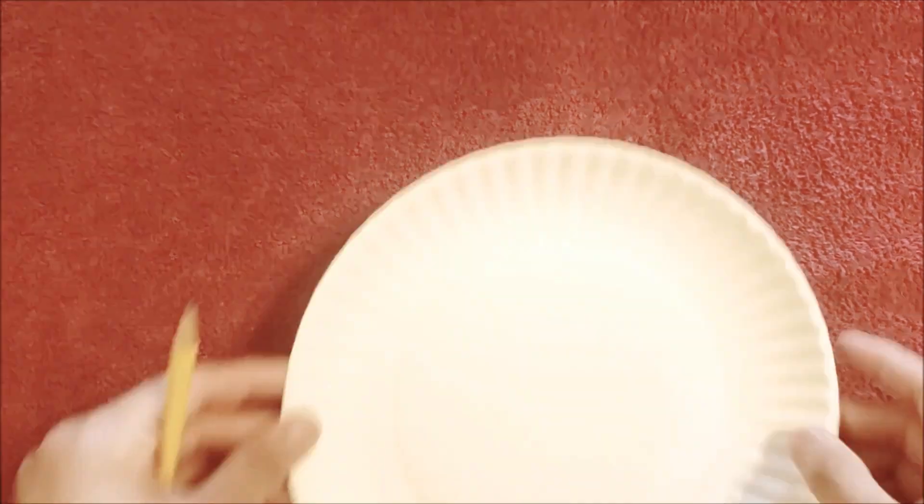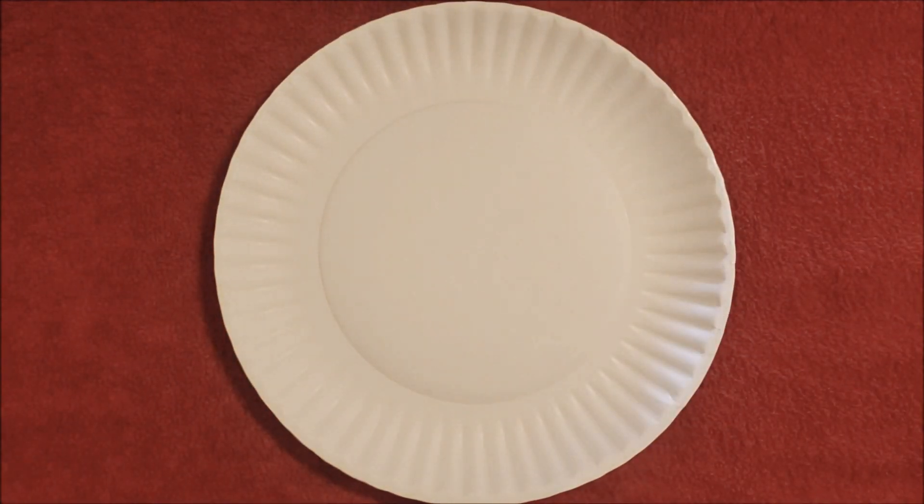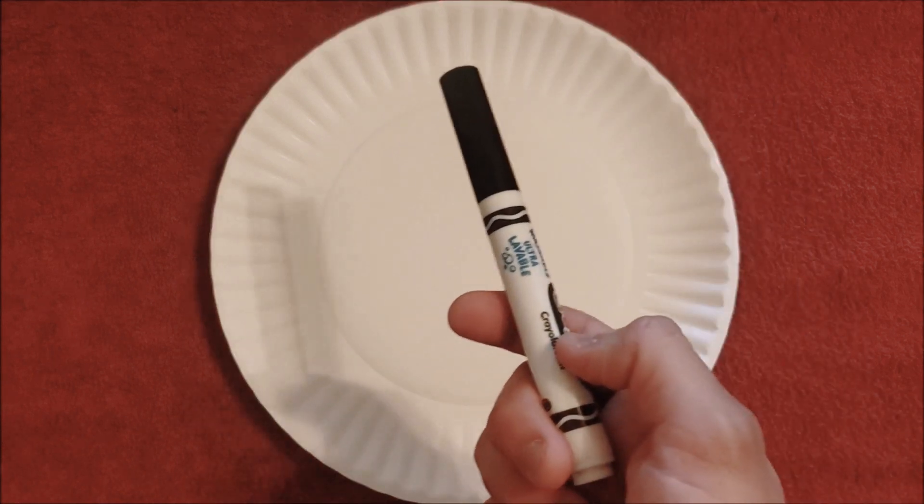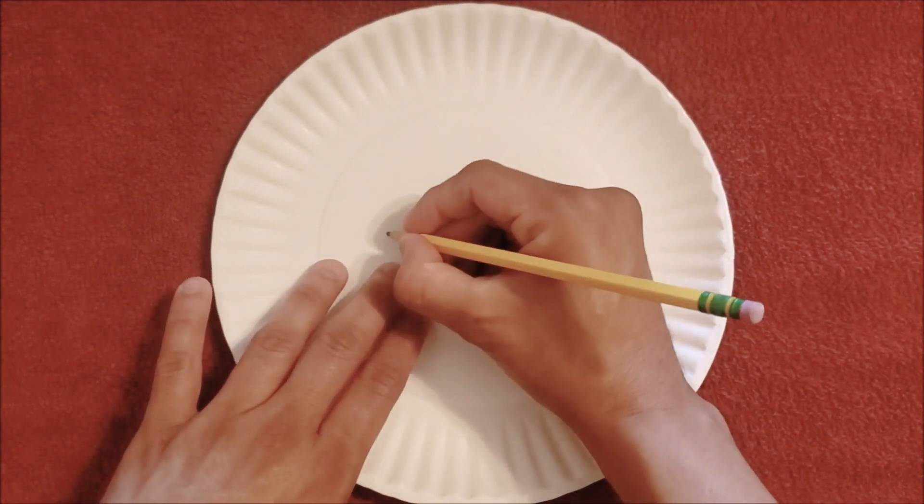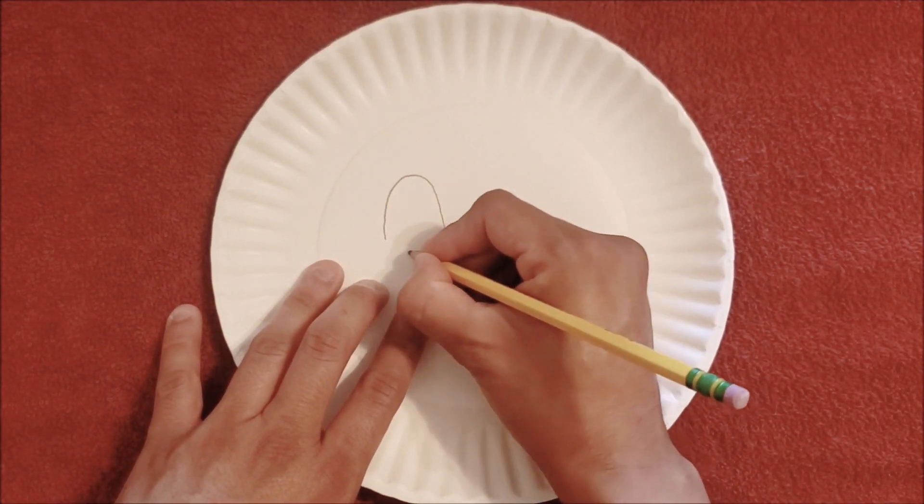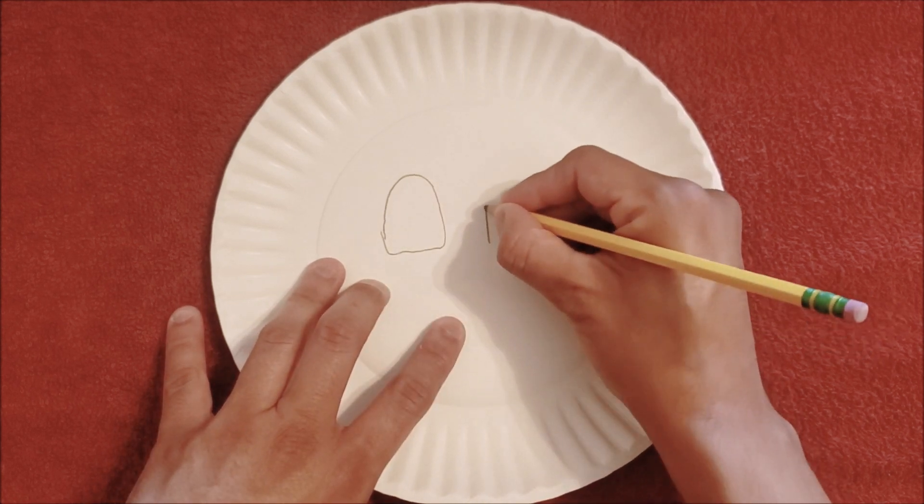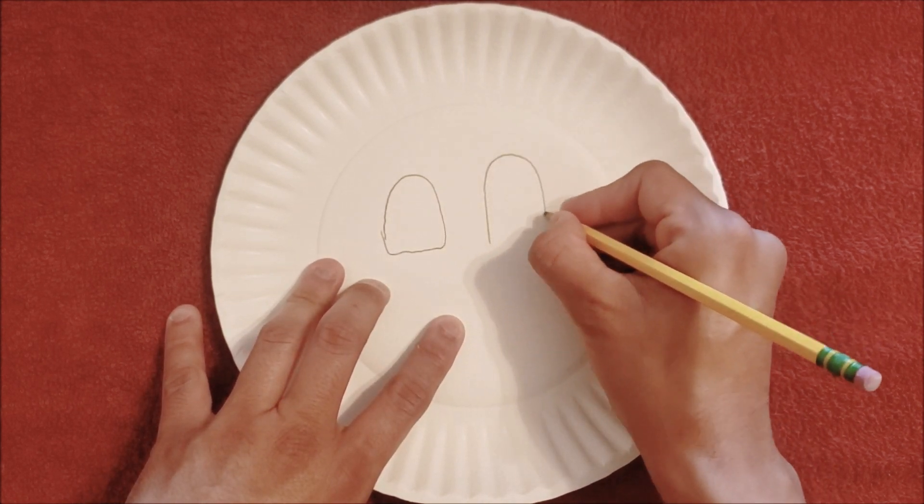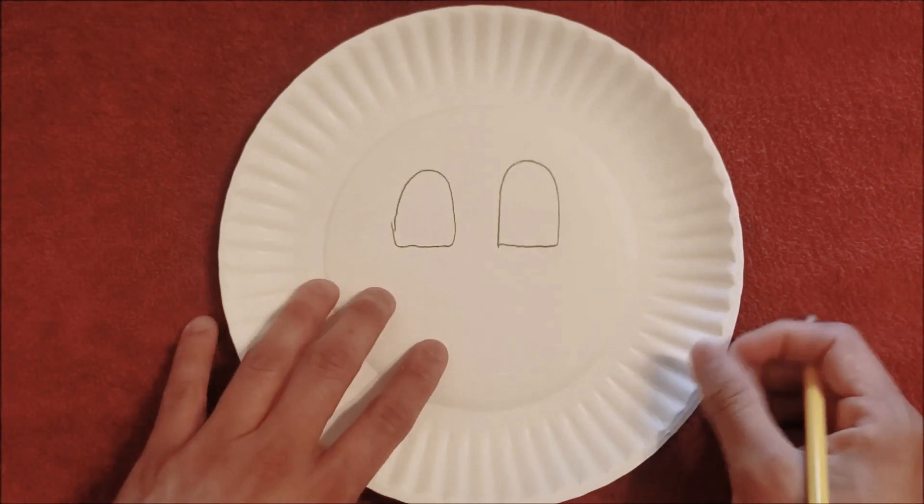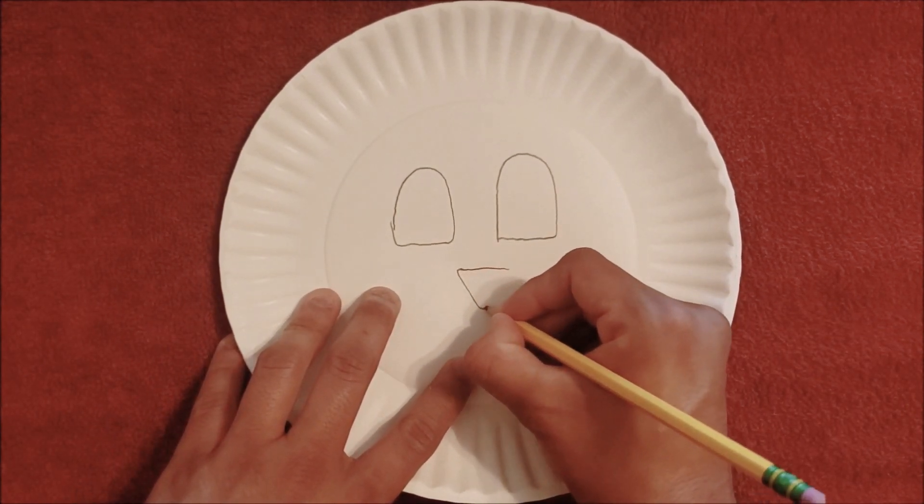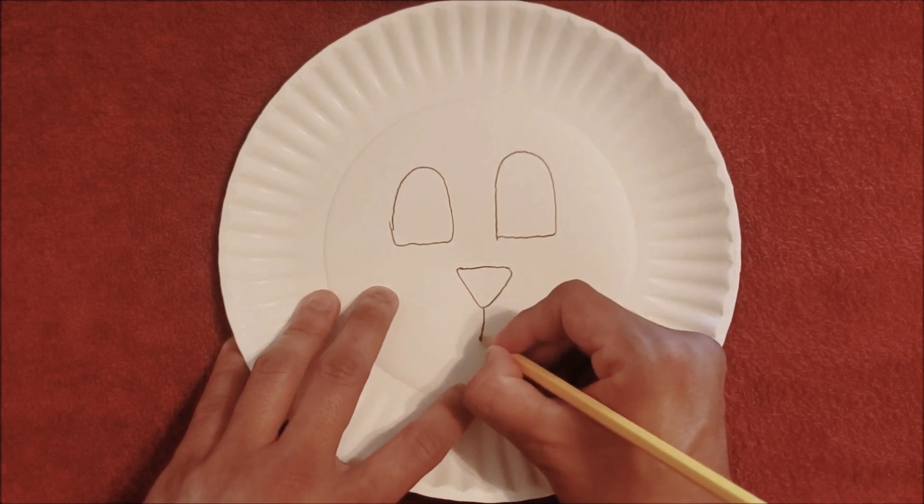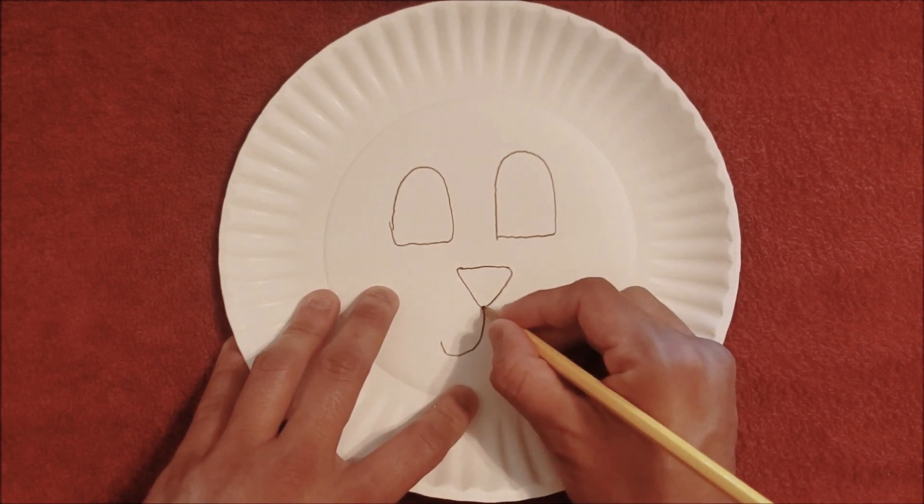First, we're going to get our paper plate. Now parents, if you like, you can give your child their marker already and they can start drawing their little faces for the Easter Bunny. But what I recommend is you guys draw out the face of the bunny first. You guys can make any face you like. Mine's looking pretty good. I am impressed with myself.